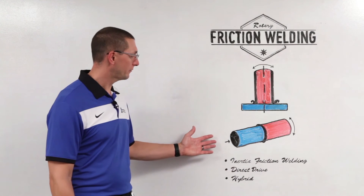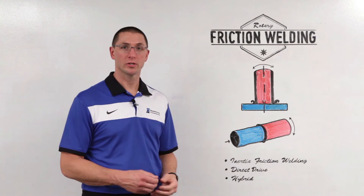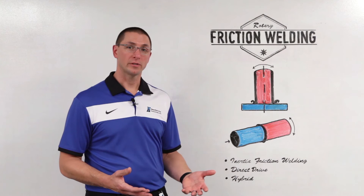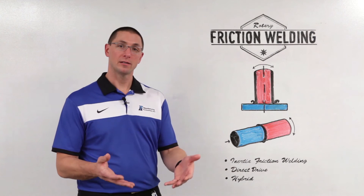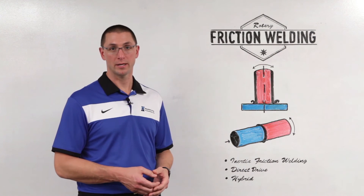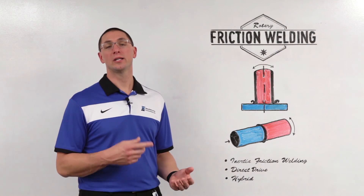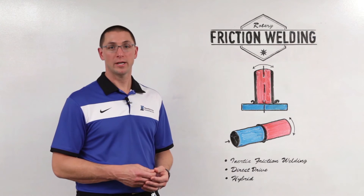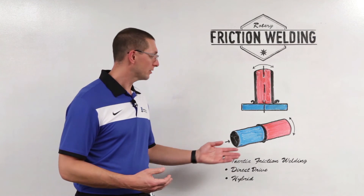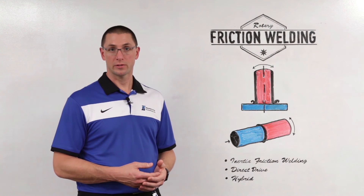In contrast, if I want to weld a solid bar, I know that there's no relative motion at the center of this part. So if I'm going to use the inertia welding process, I have to add a little bit more energy and a little bit more load in order to get the proper center heating. I can use the direct drive process and continually add energy using the rotating electric motor, which allows me to get the proper amount of center heating to weld it successfully.